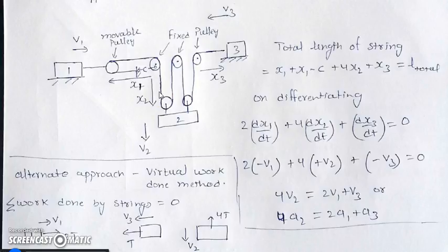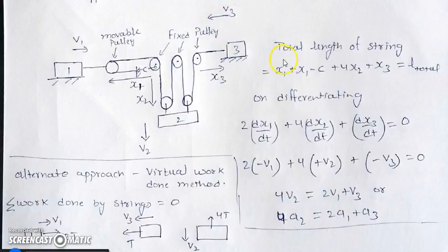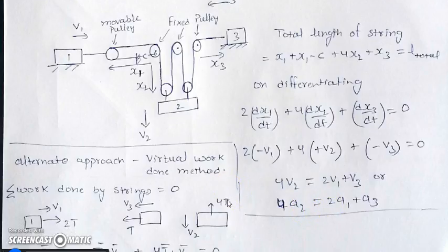This question is similar to the first pulley example. From a fixed point, we locate the positions of all movable blocks as x1, x2, and x3. The total string length is expressed in terms of these three variables — four times x2, two times x1 for the upper string, and one time x3. On differentiating, since x3 is decreasing per the assumed velocity, we apply a negative sign and obtain the constraint relation between the velocities.